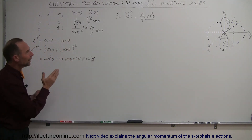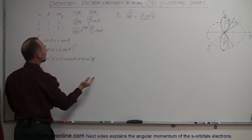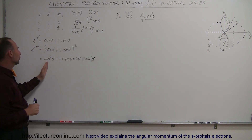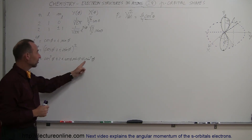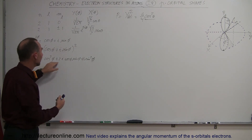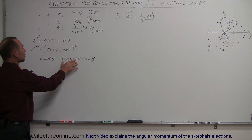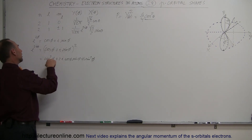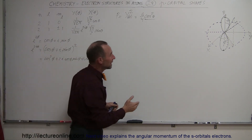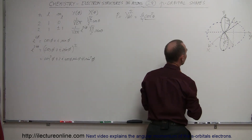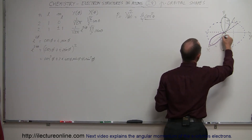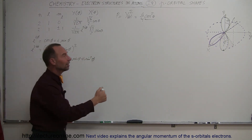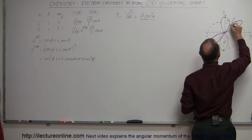So besides having a dependency on the sine of theta, we also have a dependency on the angle phi in terms of cosine squared of phi and sine squared of phi. When phi equals 0, the cosine of 0 is 1 and the sine of 0 is 0, giving a maximum value. The imaginary term has no bearing on the direction of the orbitals. The maximum dependency on the xy plane occurs when phi is 0, which is along the x-axis, so we would expect to find an orbital along the positive x-axis. When phi is 180 degrees, cosine is again 1, so we find another orbital along the negative x-axis.